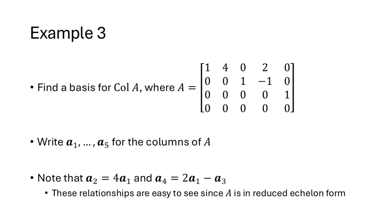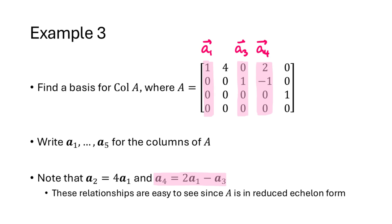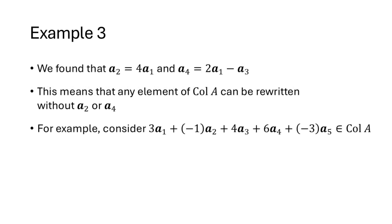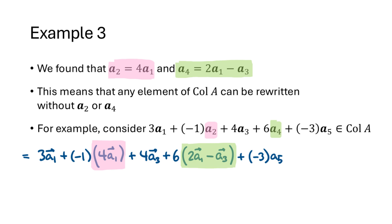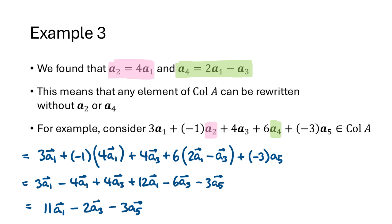Let's look at a matrix A in reduced echelon form. The second column equals 4 times the first column, and the fourth column equals 2 times the first column minus the third column — some columns are linear combinations of others. This means we can take any linear combination of all five columns and eliminate A2 and A4. For example, a linear combination involving A2 and A4 can be rewritten by substituting 4A1 for A2 and (2A1 - A3) for A4, then collecting like terms, to express it entirely in terms of A1, A3, and A5.